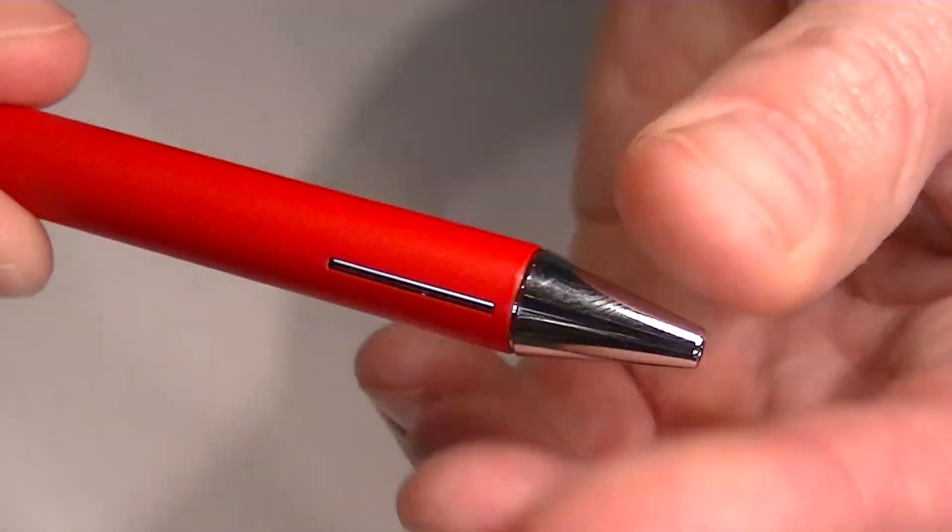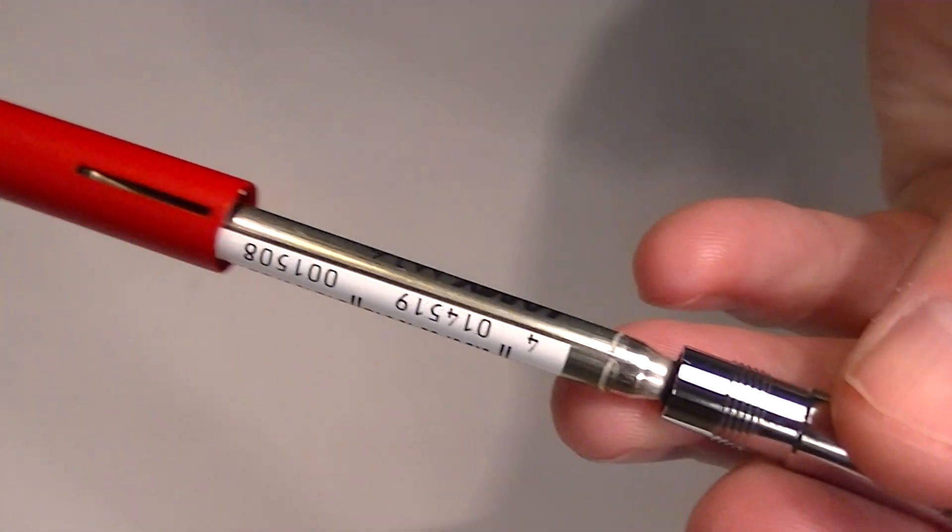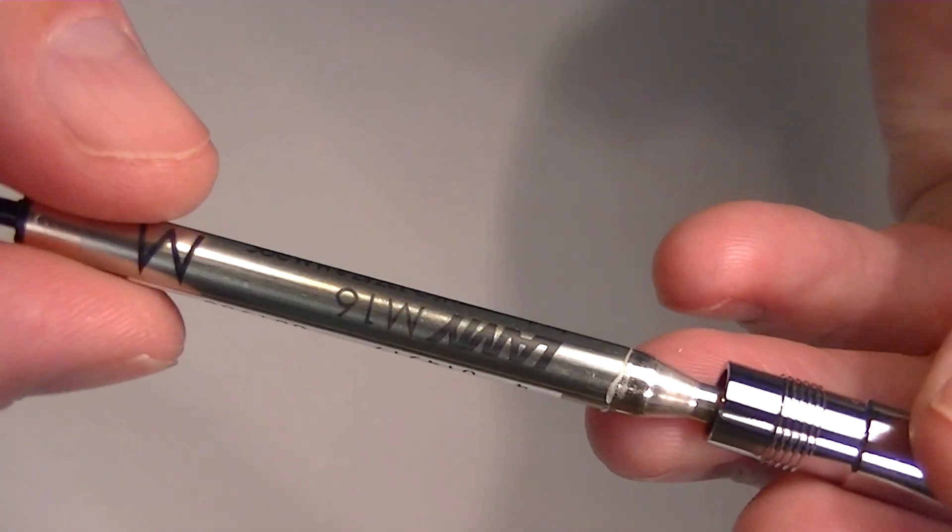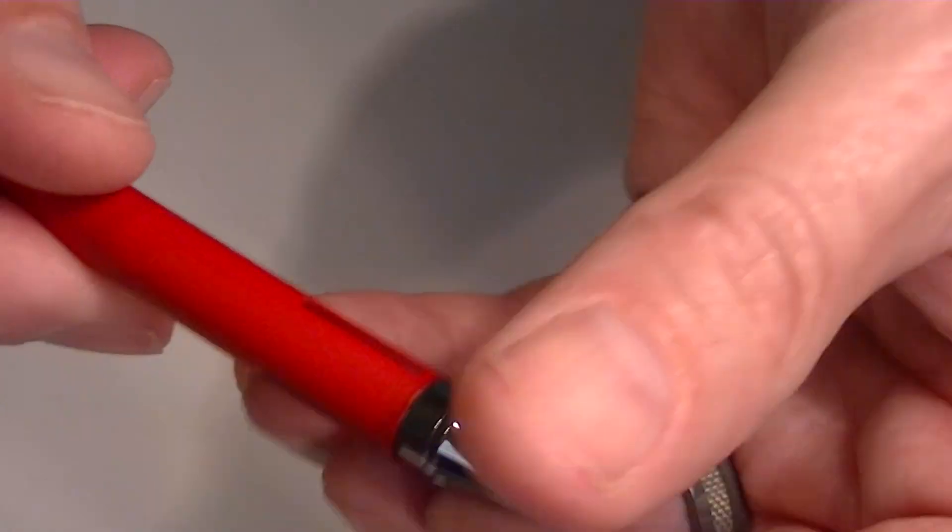To change the refill on the pen you simply unscrew that grip section from the barrel of the pen and it comes with a Lamy M16 ballpoint refill. It's a medium tip with black ink.